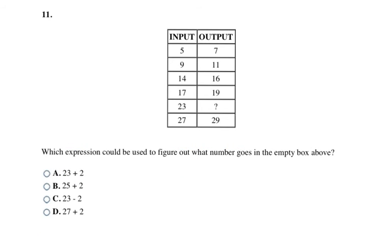Here they want you to describe what the function machine would say — what expression can be used to find the mystery number? Looking at the other examples: 5 to 7 is getting bigger, so I add 2 to get from 5 to 7. Checking: 9 plus 2 is 11, 14 plus 2 is 16, 17 plus 2 is 19, 27 plus 2 is 29 — all check out. So to get the mystery number, I take 23 plus 2, which is choice A. Thank you for joining us today!